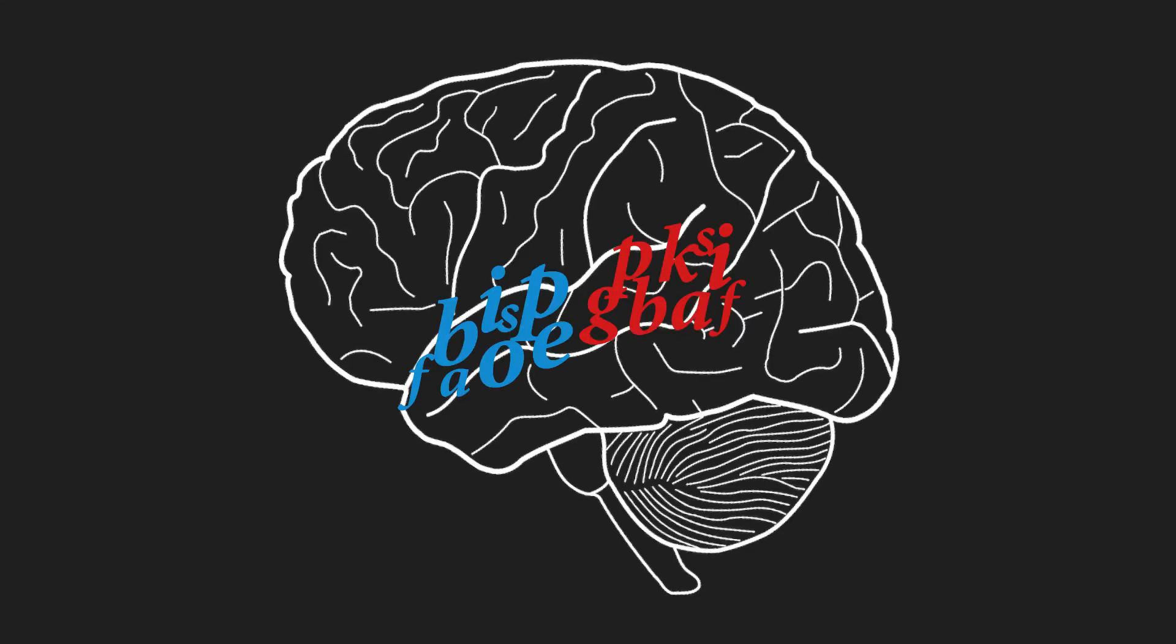Instead, we saw that both onset and sustained areas had selectivity to all phonetic feature types. The important distinction was related to context. For a vowel-selective onset electrode, the response would be much higher for the same vowel at sentence onset than in the middle of a sentence. You can read more about the specific feature tuning of these areas in the paper.